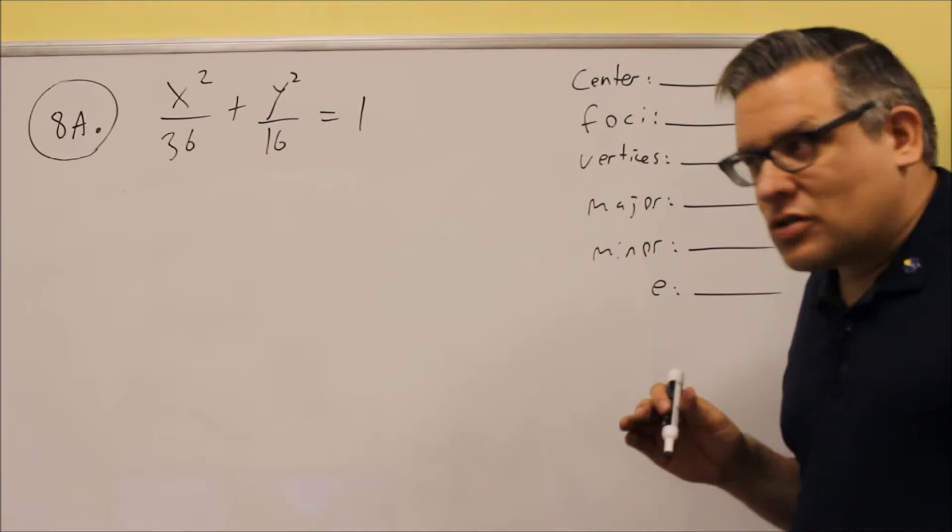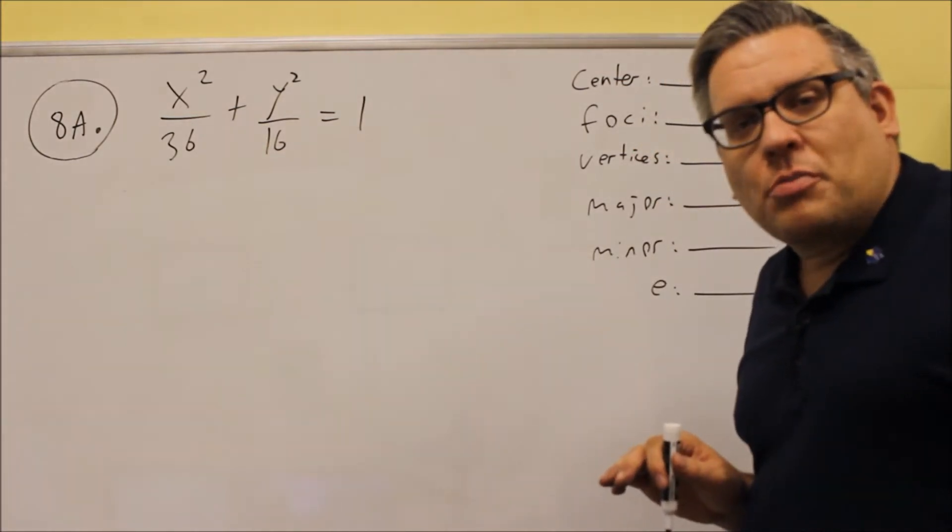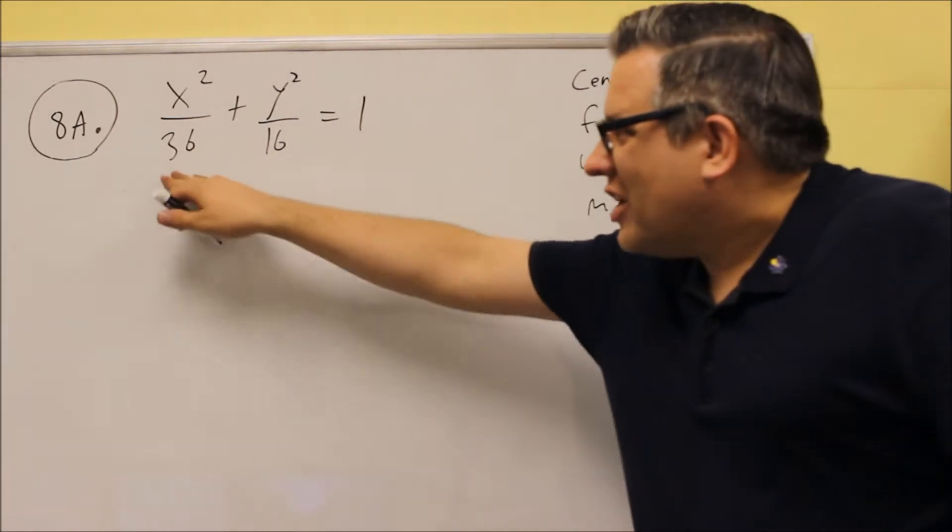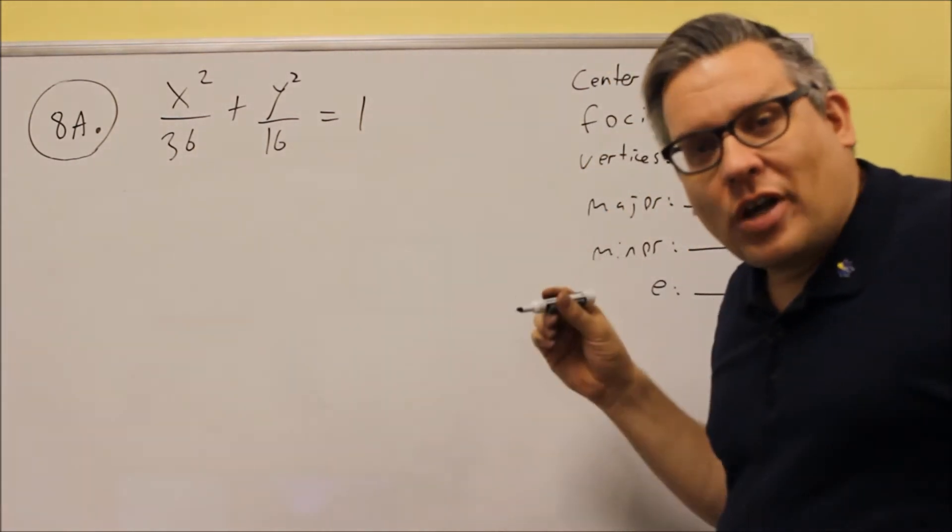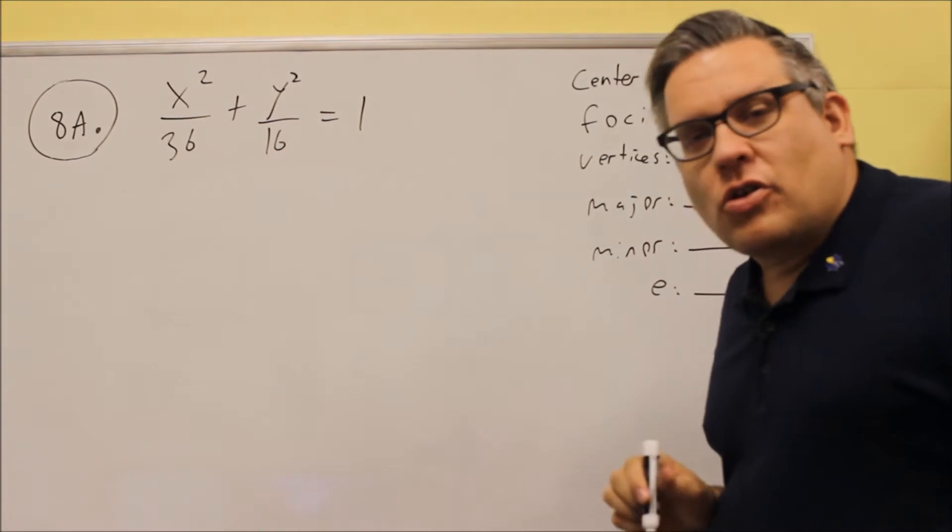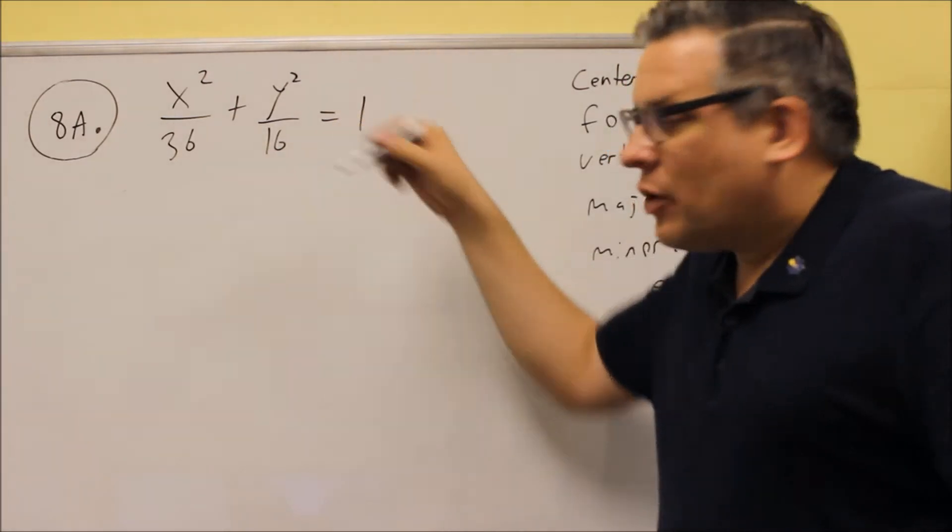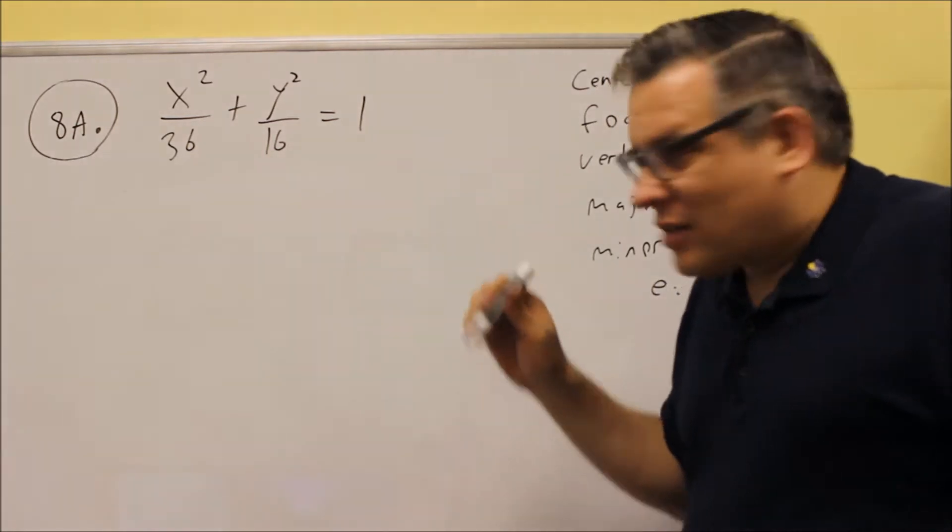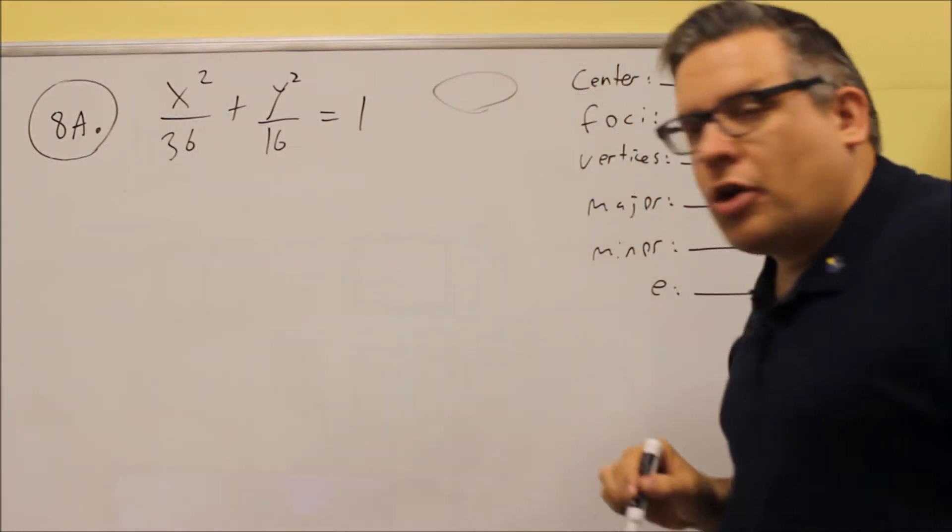Now, for ellipses, the direction of the ellipse is determined by where the larger number is. If the larger number is underneath the x, it opens up sideways. If the larger number is underneath the y, then we know it opens up and down. In this case, the larger number is underneath the x, which means we know it's going to have to open up sideways.